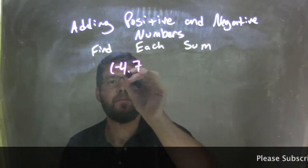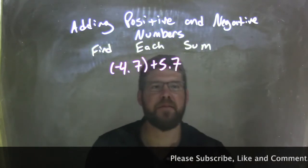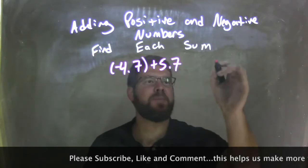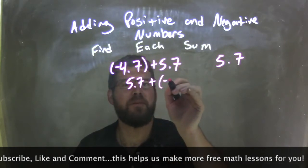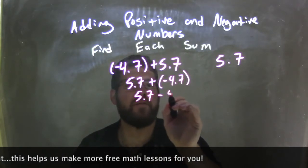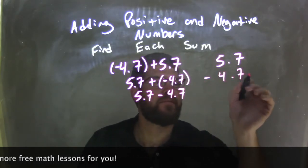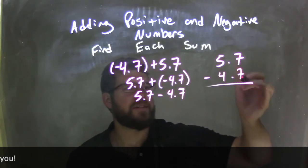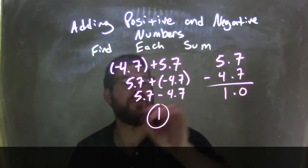Negative 4.7 plus 5.7. By the commutative property I can flip this to 5.7 plus a negative 4.7. Adding a negative is the same as subtraction, so 5.7 minus 4.7. 0.7 minus 0.7 is 0, and 5 minus 4 is 1. My final answer is just 1.